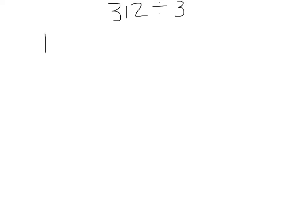We draw a symbol that looks very similar to the traditional division symbol, except we extend it farther down so it looks like a seven — that's why it's called the Big Seven. Just like traditional division, we put the dividend inside the box and the divisor outside the box.